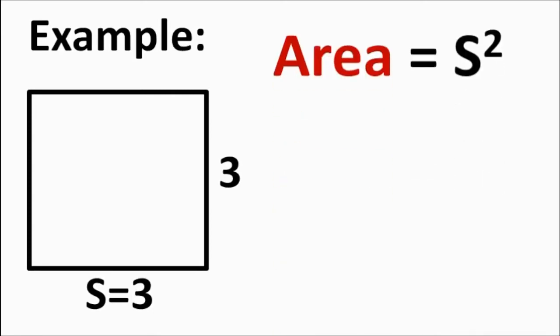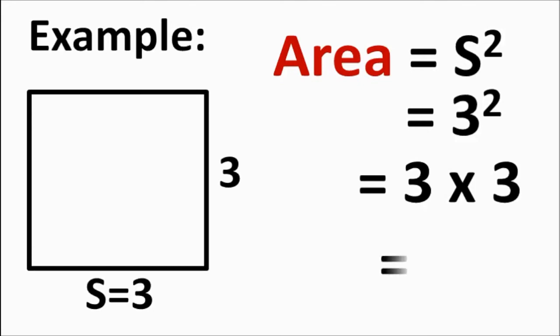To find the area of the square, we have Area = s², wherein s is the side of the square. By substituting the given, Area = 3². Therefore, we have 3 multiplied by 3, and we get 9 square units.